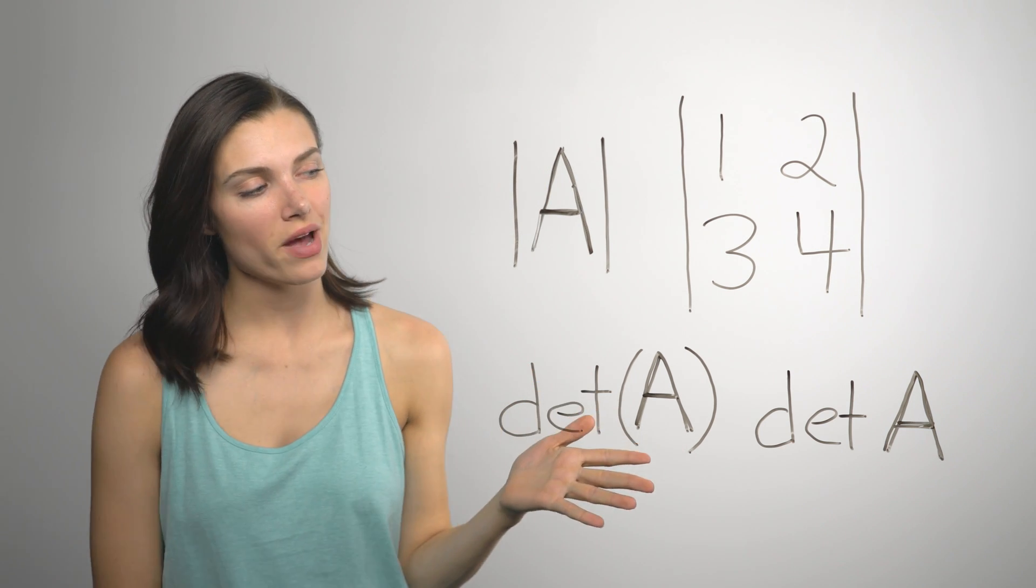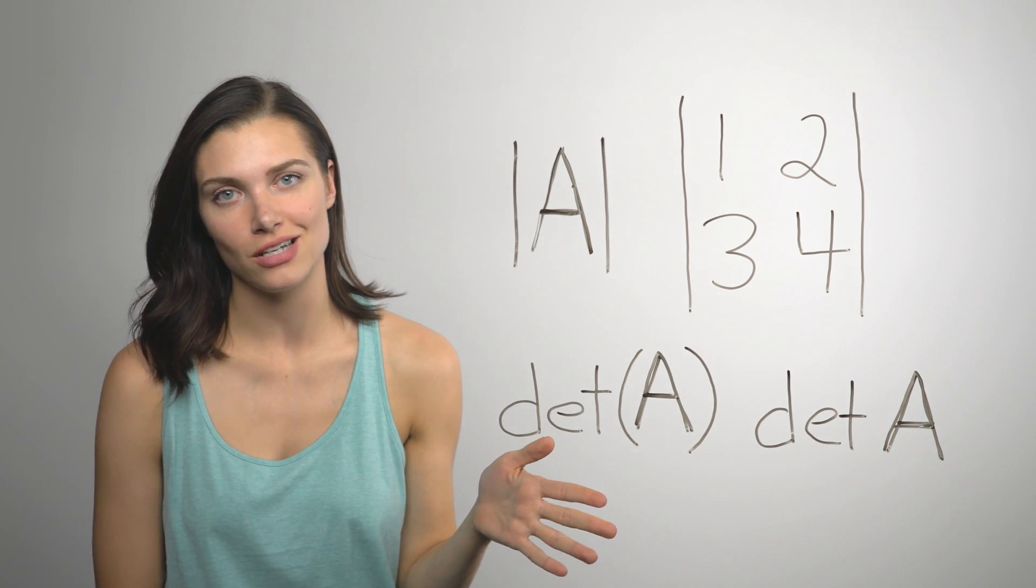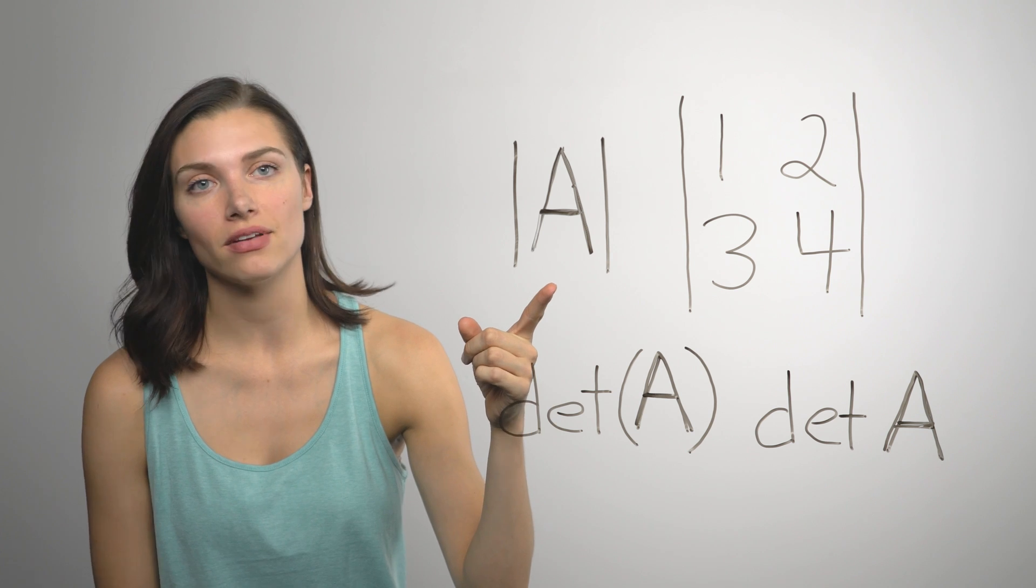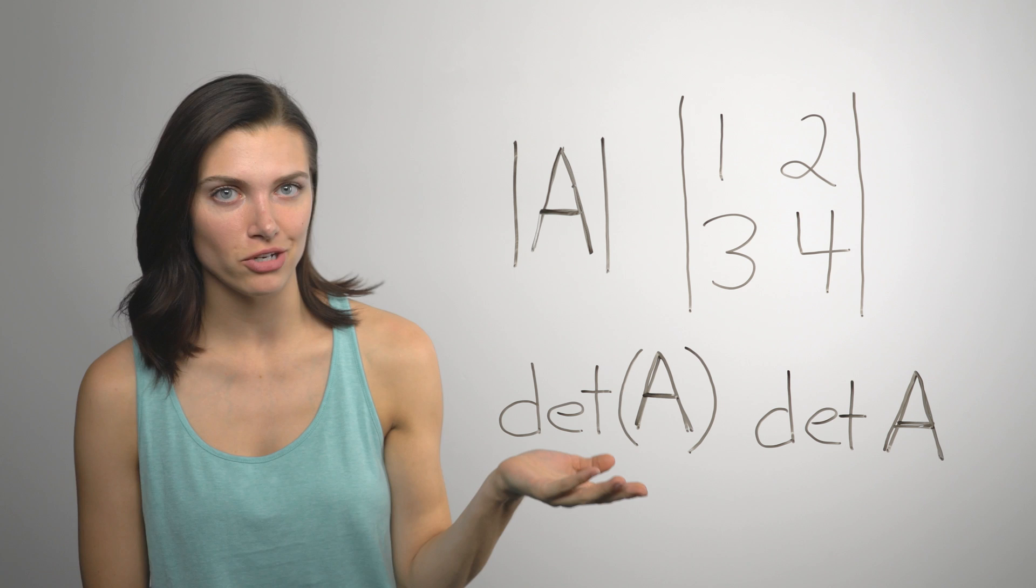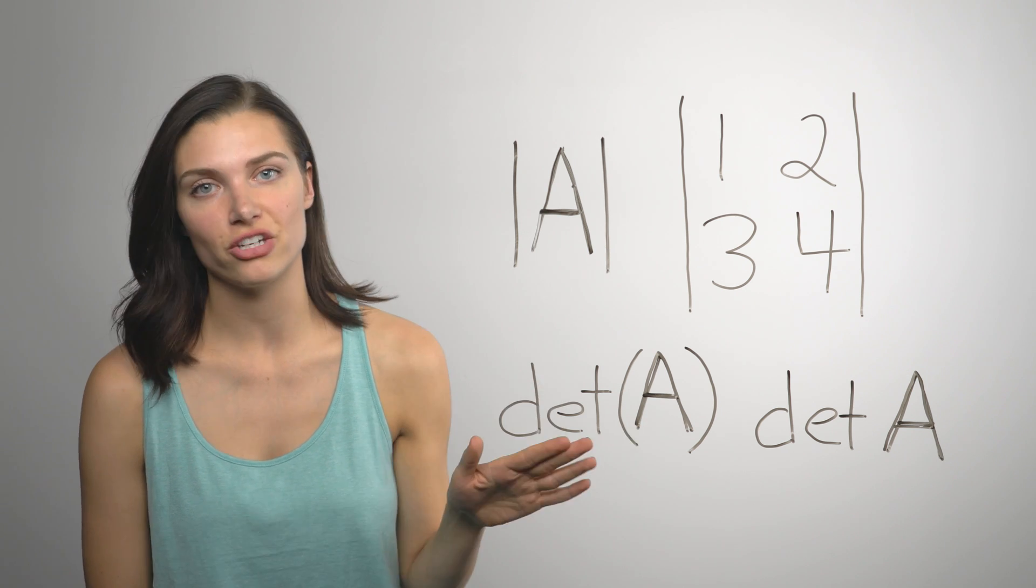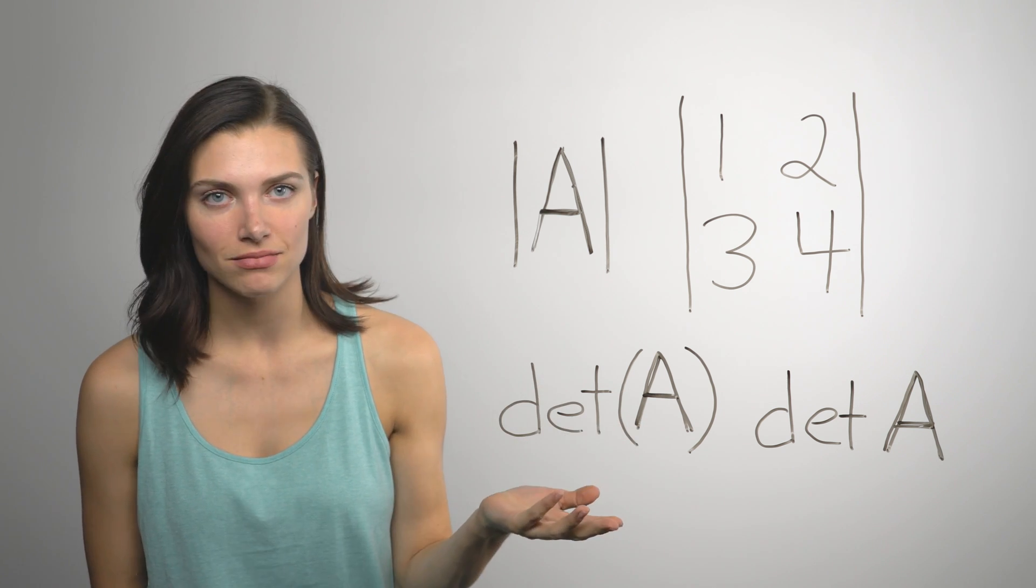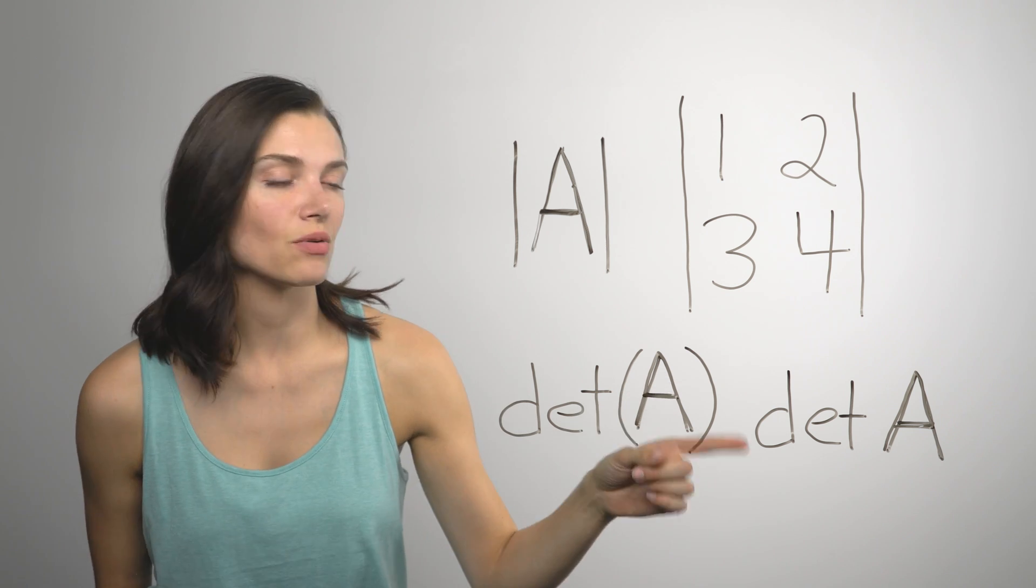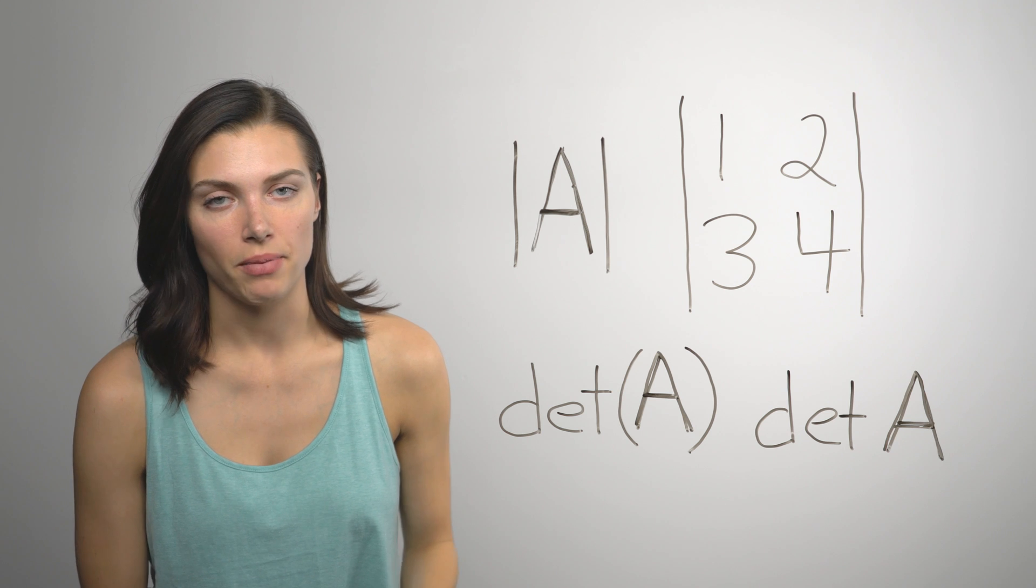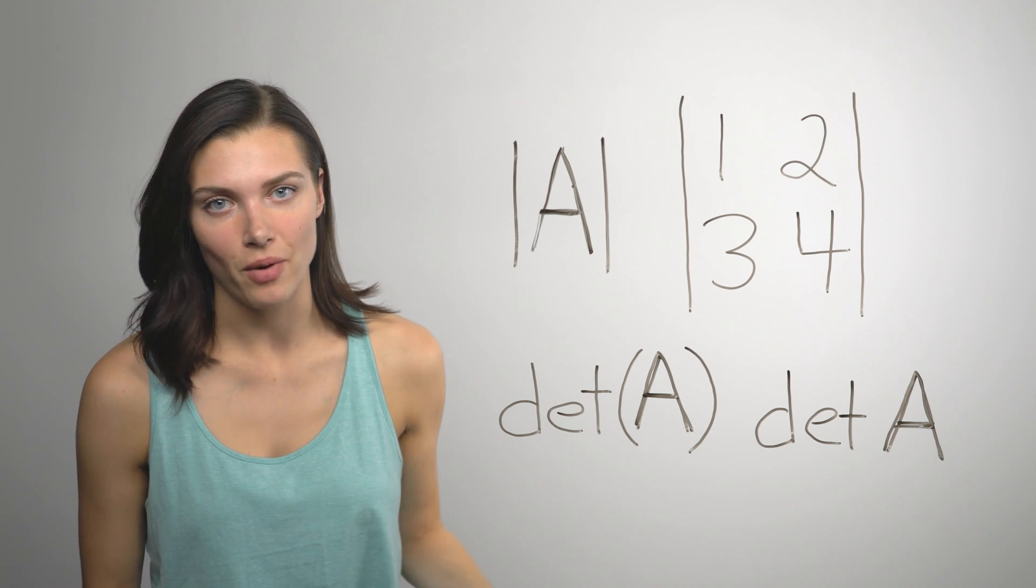So these are some of the ways to write the determinant of a matrix in an equation. This symbol is exactly the same as the absolute value symbol, but on a matrix or matrix variable, it means you'll find the determinant. Some people write DET, which is pretty self-explanatory, but you may also see DET without the parentheses. Apparently it's hard to get everyone to write it the same way.